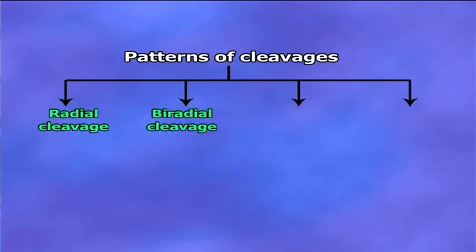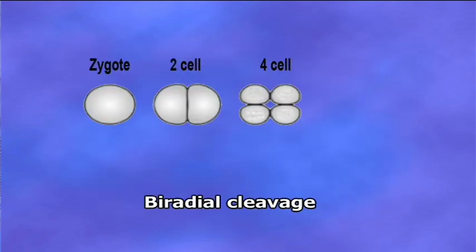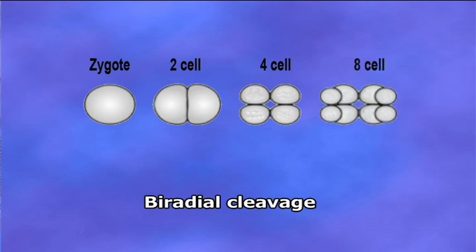Number two, biradial cleavage: this pattern is found in barrel-like animals, that is ctenophores. Four blastomeres occur by the usual two meridional cleavages. The third cleavage plane is vertical, resulting in the formation of a curved plate of eight cells arranged in two rows of four symmetrical cells. In these rows, the central cells are larger than the end cells.